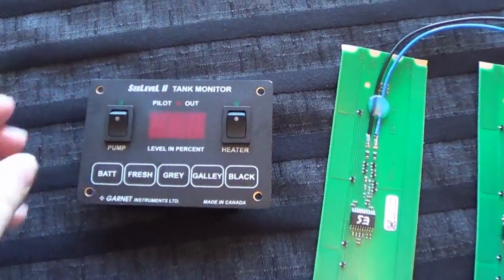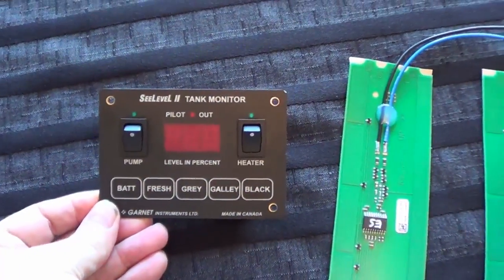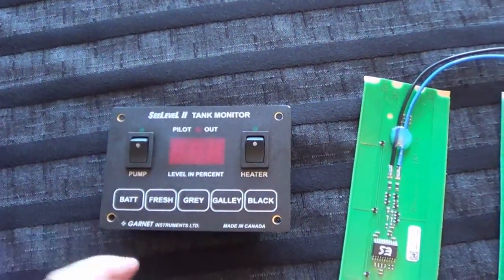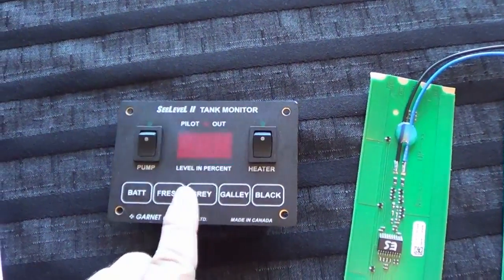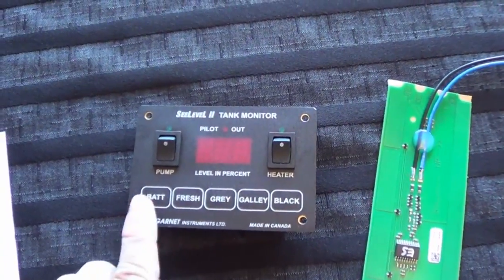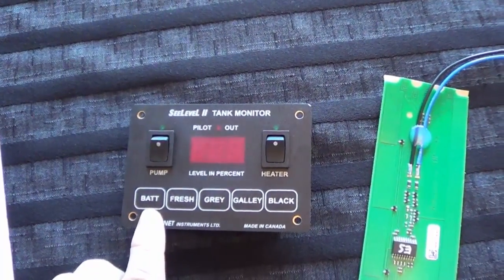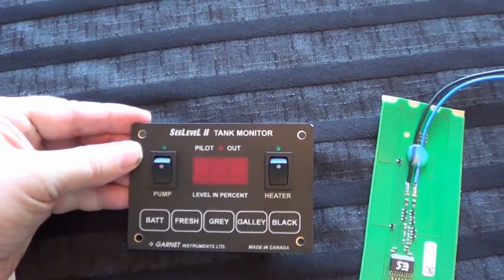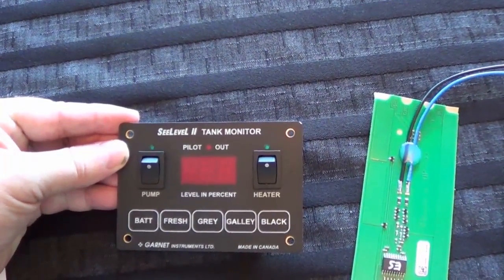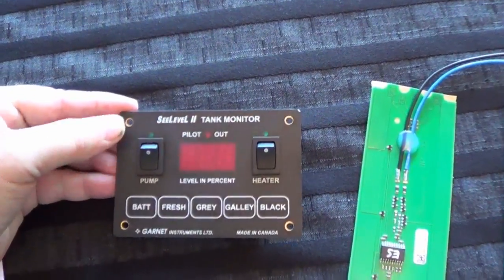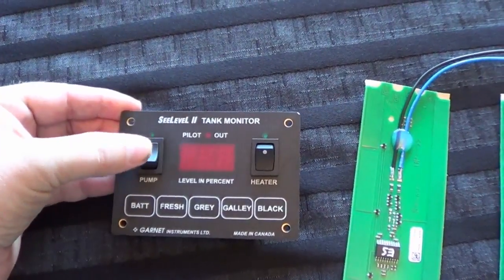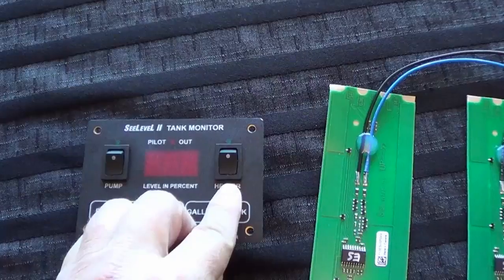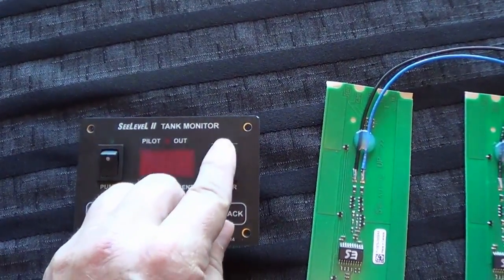So the one I bought comes in all kinds of different configurations and models, but the one I got has black, galley, grey, fresh. It'll also be able to hook up and measure my battery voltage and there's two switches on it. There's two switches on my existing panel so that'll replace that. There's the water pump switch and also the heater, which is the water heater switch for using on gas.